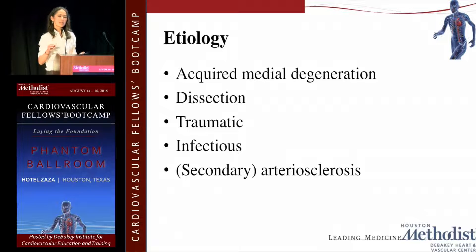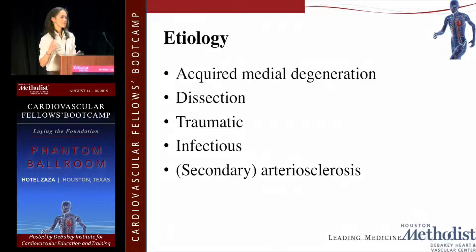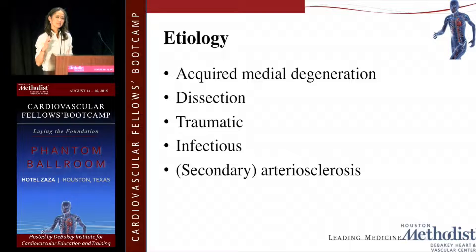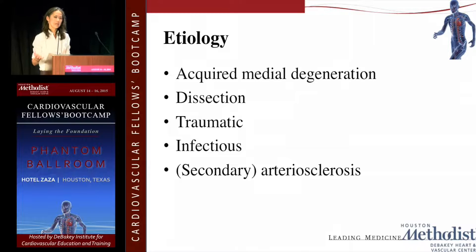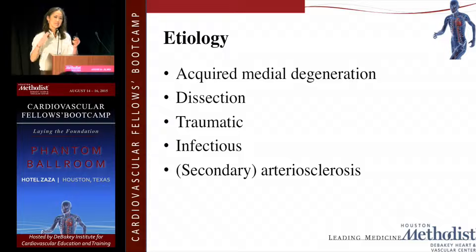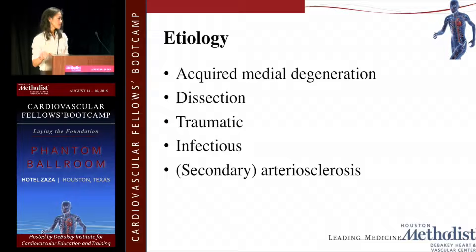Splenic and hepatic artery aneurysms are thought to be due to acquired medial degeneration or medial fibrodysplasia of the splenic artery. Sometimes aneurysms can form after spontaneous dissection, or traumatic dissection can lead to aneurysm formation. Infectious causes are fairly rare. In these aneurysms you can also have secondary atherosclerosis, so you may see calcification form in the wall of the splenic artery or in the wall of a large hepatic artery aneurysm.